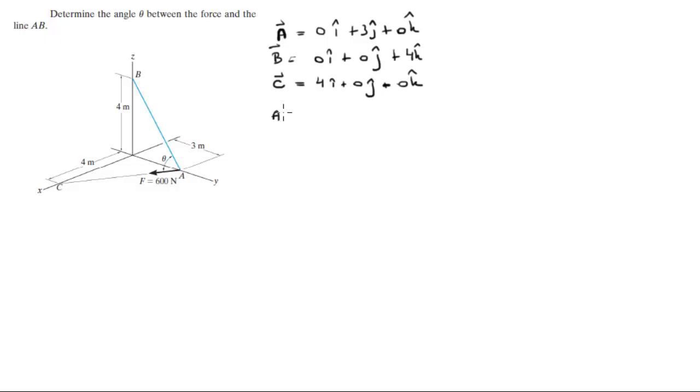So now we're going to find AB, which is equal to B minus A, which is equal to 0i minus 3j plus 4k. The magnitude of AB can be found by doing the square root of the x component squared plus the y component squared plus the z component squared. So when you plug these three values into the formula, you get that the magnitude is exactly 5.